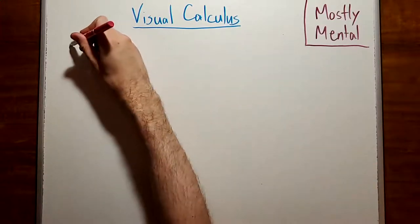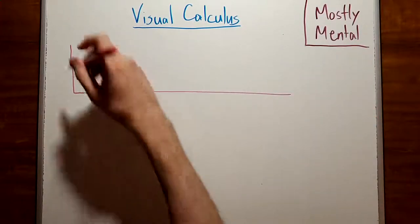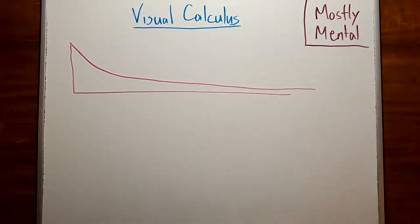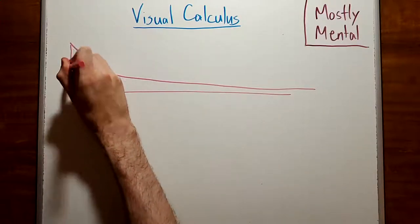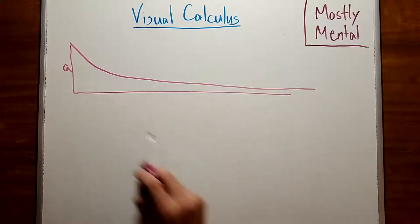Then the child's path will be a right angle, so it'll look something like this. And the toy will follow a curve, like this one, known as a tractrix. If we call the length of the string A, then our question is, what's the area between the two paths?